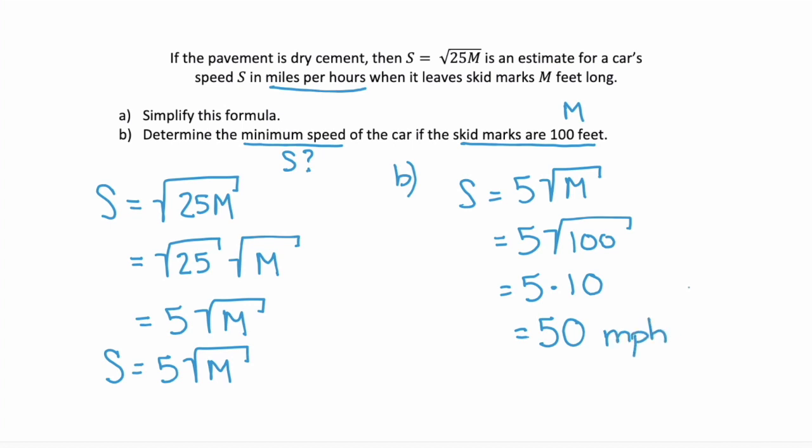So a skid mark of 100 feet means the car was going a minimum speed of 50 miles per hour.